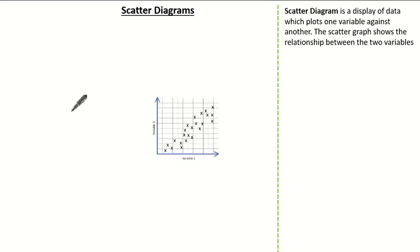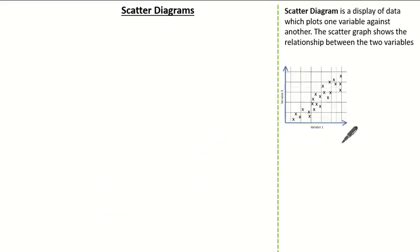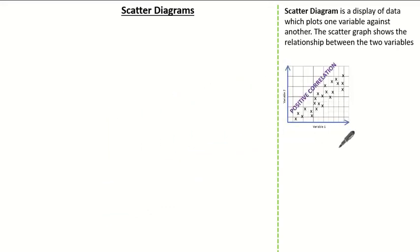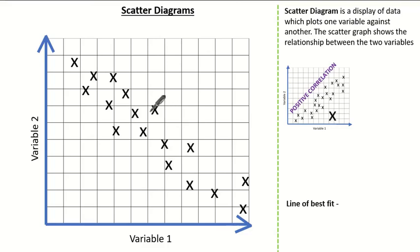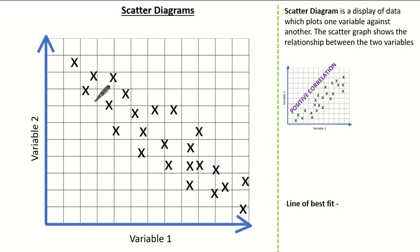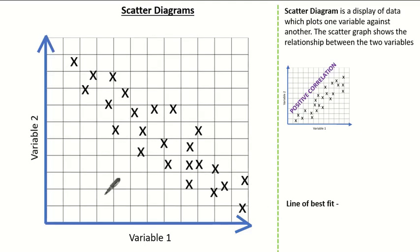Now we know what a positive correlation is, let's look at a different type of scatter graph. Here the way in which the data is scattered shows another type of relationship between the variables. If the data is scattered similar to this, we say this is a negative correlation. This means as variable 1 increases, variable 2 decreases.